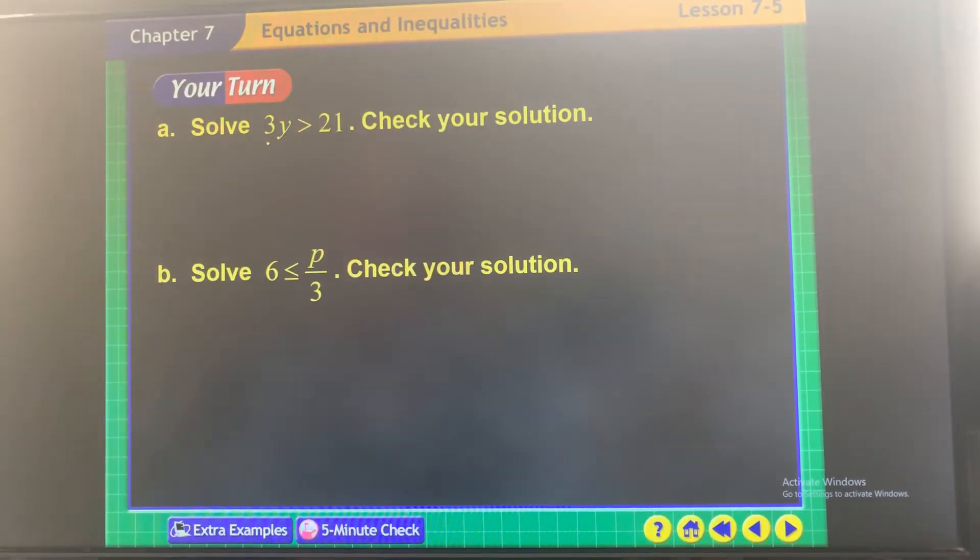Okay, so this one, yep, divide both sides by 3. Y is everything greater than 7. This one, multiply both sides by 3. Make sure you put it on the side and not underneath. Then P, these cancel, P is every value greater than or equal to 18.